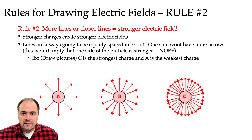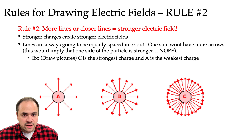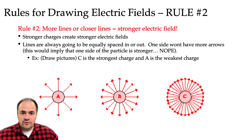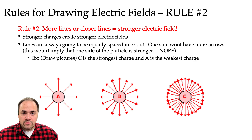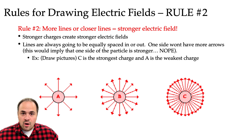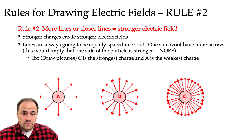Rule number two for drawing electric field lines: if we want to show a stronger field, we draw more arrows. Charge A has the fewest amount of arrows, which indicates it's the weakest charge. Charge B has a few more arrows drawn around it, and charge C has the most by far. You'll notice though that they are all equally distant from each other when coming from the charge — and that is a must. We can't draw any arrows closer together on one part of the charge and further away on another, as that would imply the field is of different strengths around the charge, which just isn't accurate.